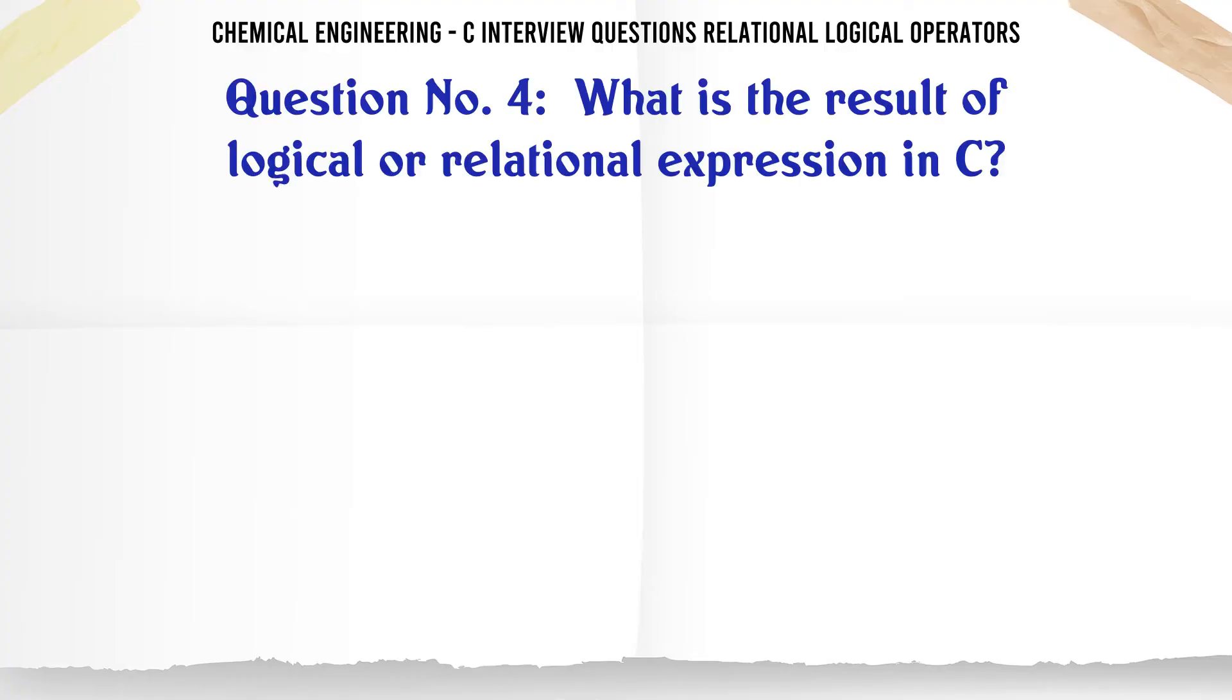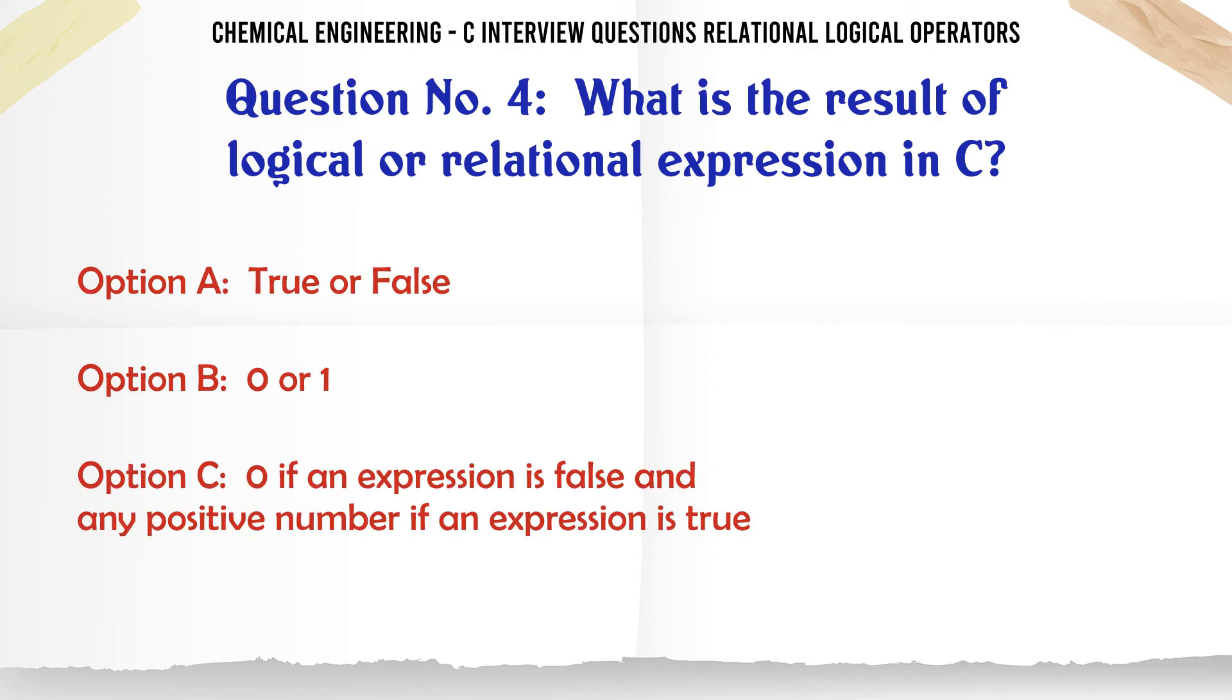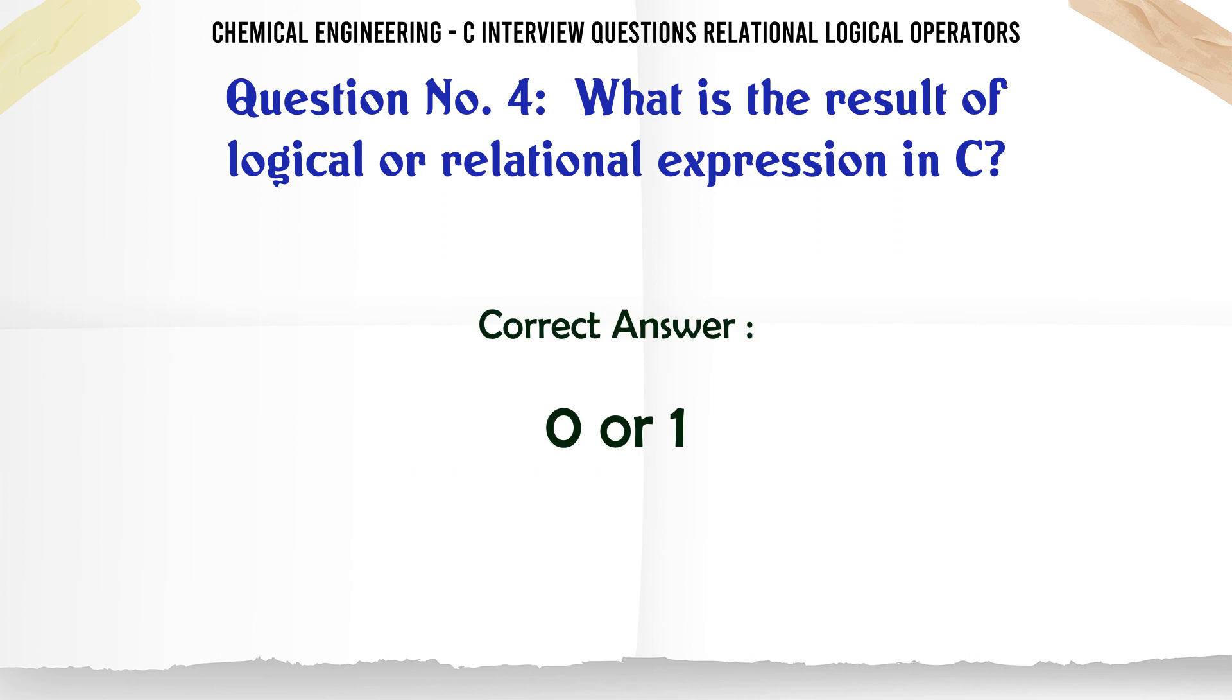What is the result of logical or relational expression in C? A. True or false. B. 0 or 1. C. 0 if an expression is false and any positive number if an expression is true. D. None of the mentioned. The correct answer is 0 or 1.